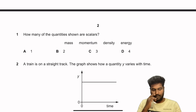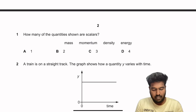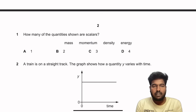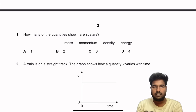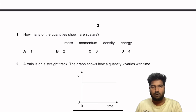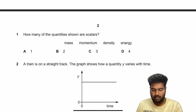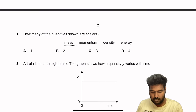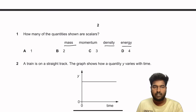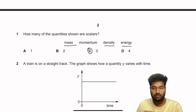Question 1: How many of the quantities shown are scalars? We have four quantities. Mass is a scalar, density is a scalar, and energy is a scalar — so in total we have three scalar quantities, except momentum. So C is the right answer.